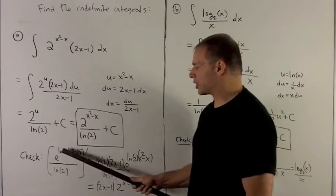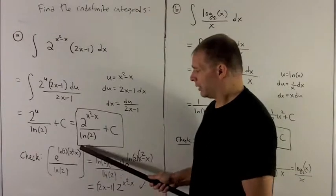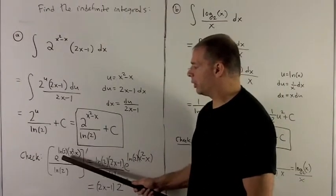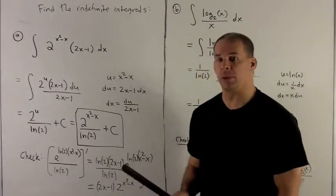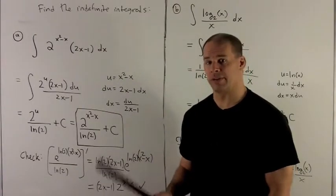Now I want to do the derivative of e to the natural log of 2, x squared minus x. This here, I could just think of as being u. The derivative of e to the u is just e to the u again times the derivative of u.